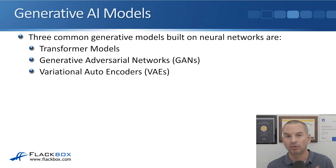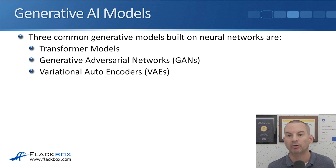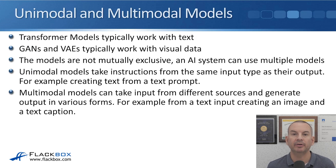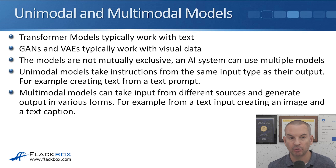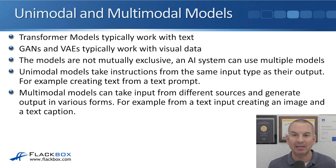Next let's talk about generative AI models — models used in generative AI for generating new content. Three common generative models built on neural networks are transformer models, generative adversarial networks (GANs), and variational auto encoders (VAEs). Transformer models typically work with text, while GANs and VAEs typically work with visual data like images and video. The models are not mutually exclusive — an AI system can use multiple models, such as a transformer in conjunction with a GAN, mixing and matching techniques to get the desired result.